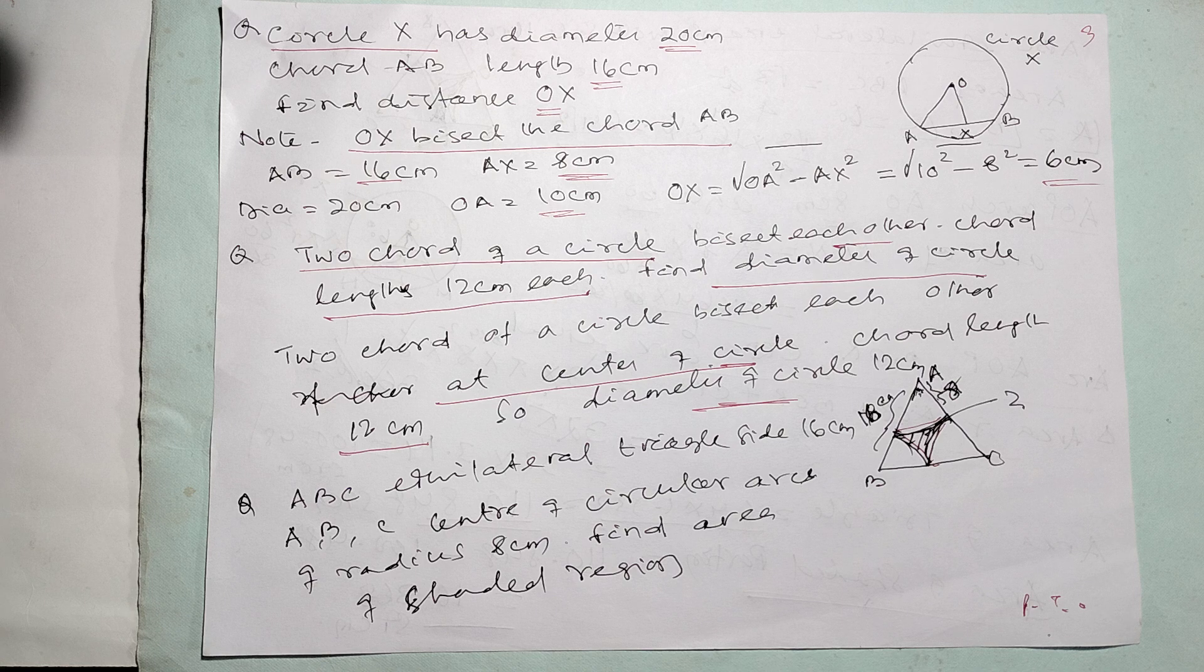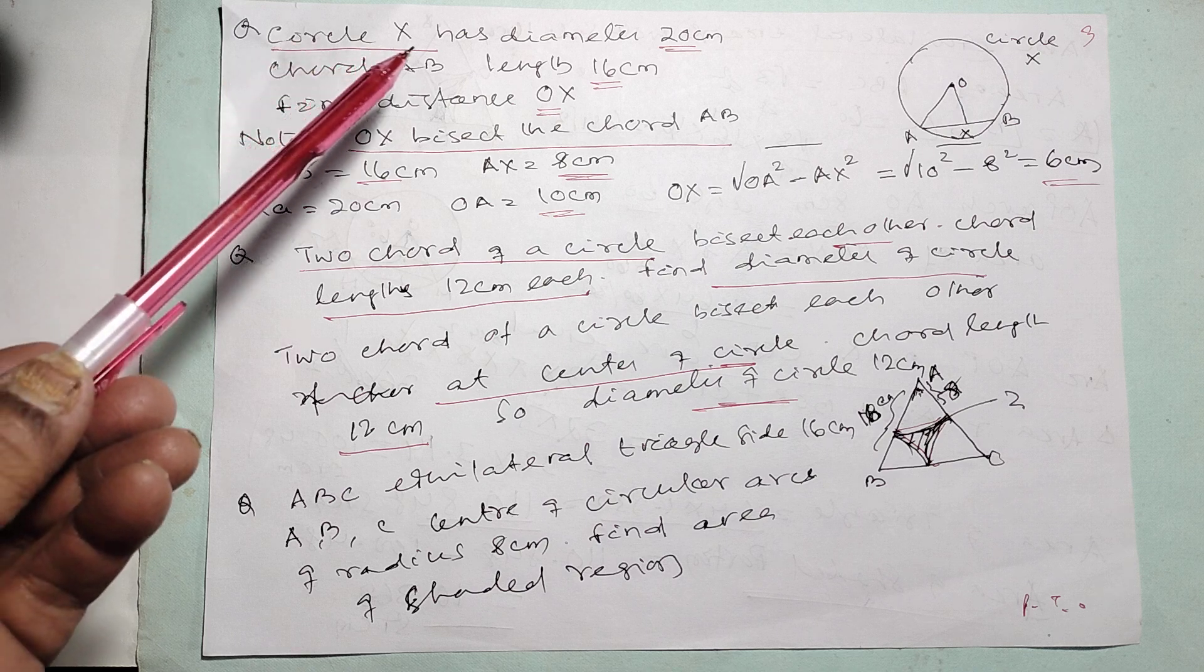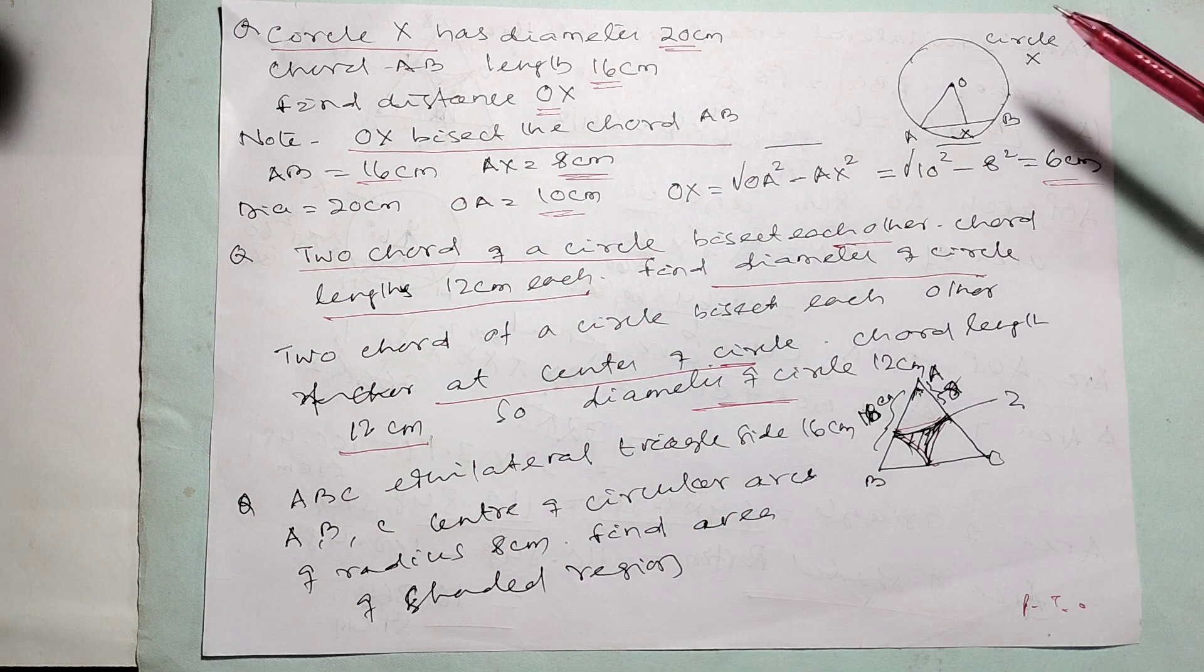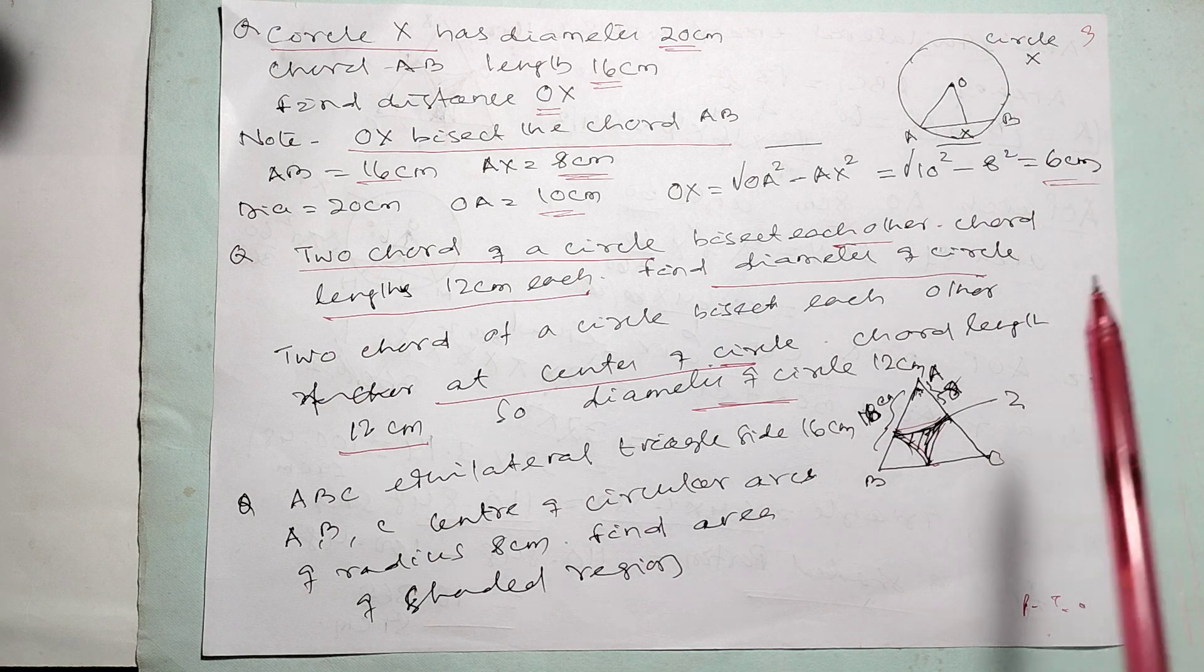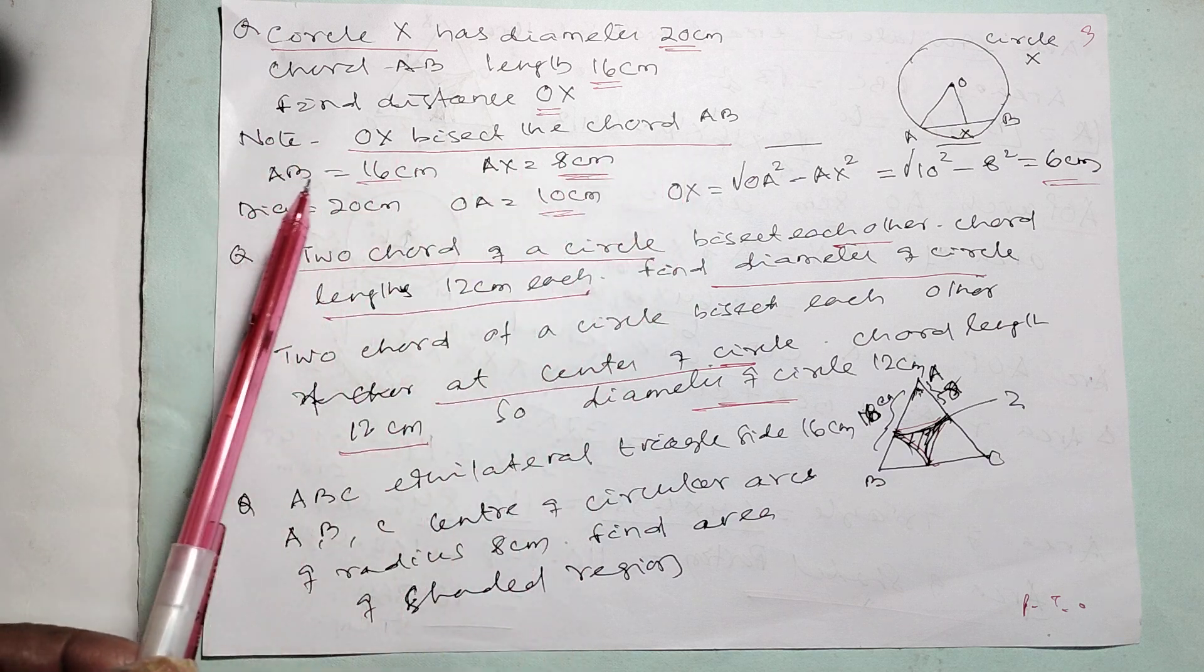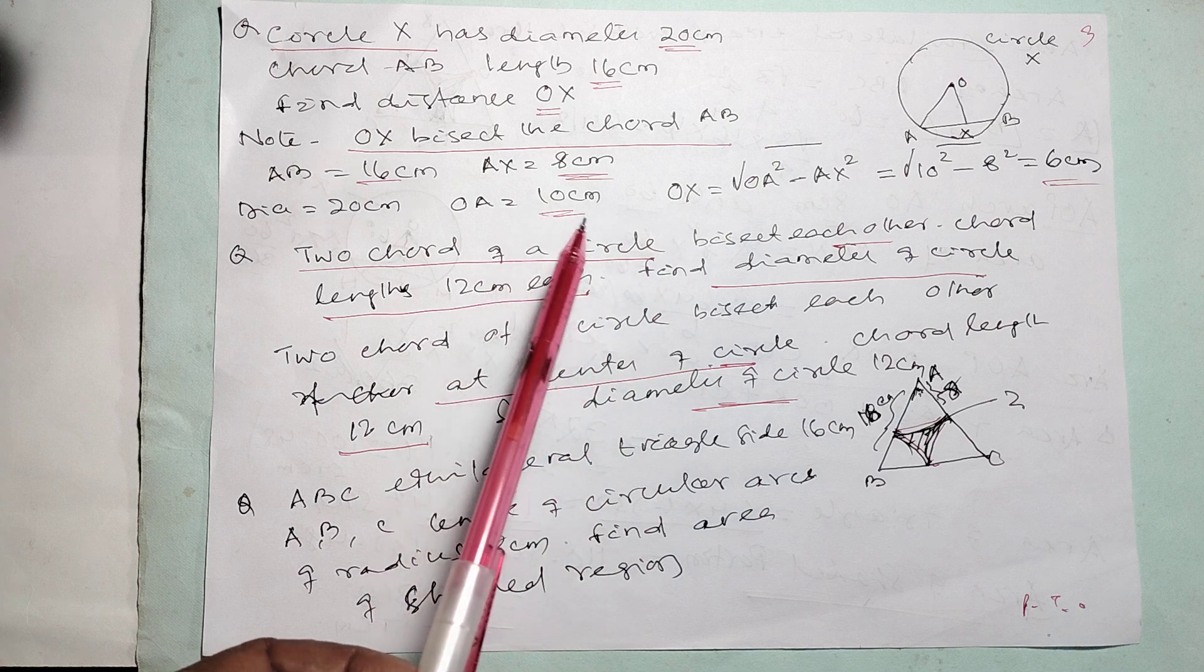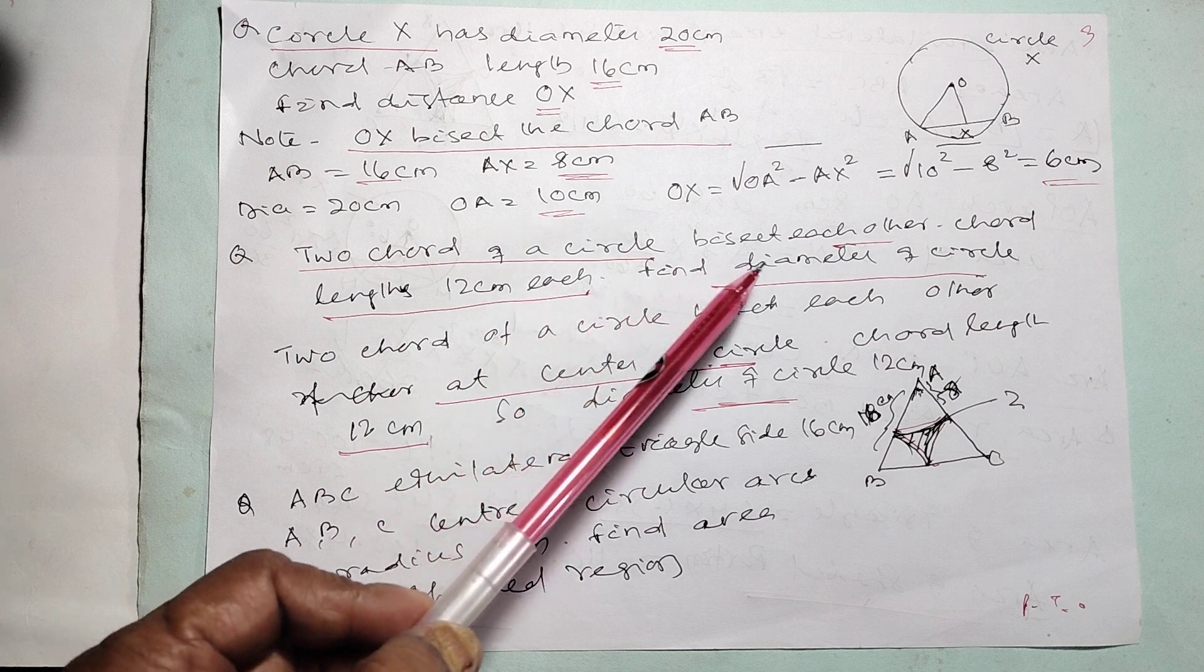Then, come to this is a problem for geometry. And here, the circle x has a diameter of 20 centimeter. Chord length is 16 centimeter. Find the distance. Mind, this is only one formula important. This chord, any length formula diameter, a bisector chord. So, no. OX bisects chord AB. Then, what is this? AX is equal to 8. Already, OA is equal to 10. So, your OX is equal to 6 centimeter.